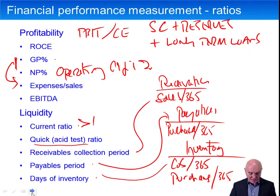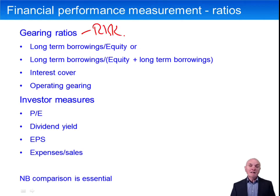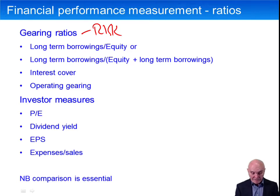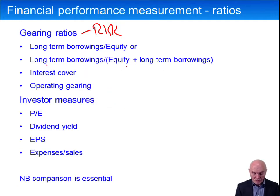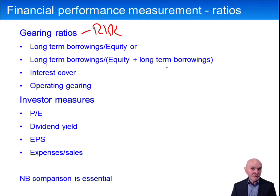Gearing ratios look very much at risk. High gearing implies high borrowing and a high amount of interest to pay every year, whether or not profits are there. The gearing ratio is either long-term borrowing over equity, or long-term borrowing over equity plus long-term borrowings. It doesn't matter which is used as long as you are consistent from one year to the next — equity over debt, or equity over equity plus debt, using book values in all cases.